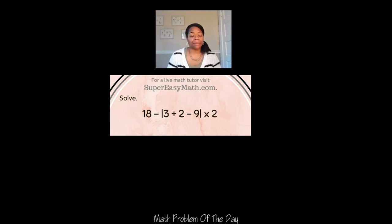We have 18 minus absolute value 3 plus 2 minus 9, another absolute value sign, times 2.